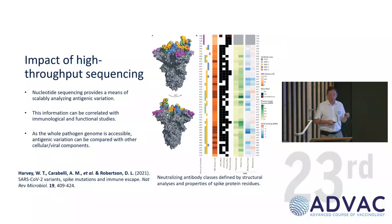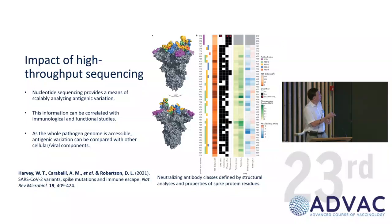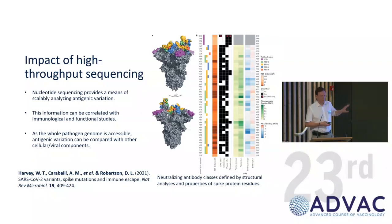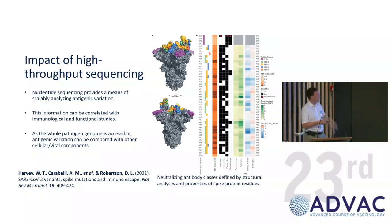The problem is that what this does is define the problem but doesn't necessarily enable us to solve the problems of variation. Even though there's a lot of talk about COVID variants, COVID is not a very variable pathogen compared to the vast majority of pathogens we have to deal with. It's young and it has varied and there is some immune escape, but it's not really variable in the way that influenza is, or even some of the bacterial pathogens.